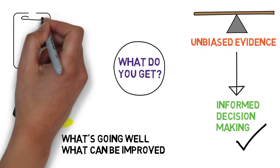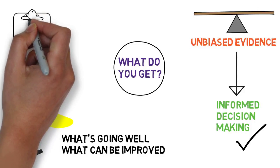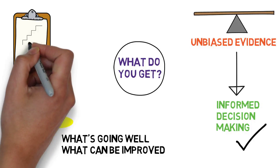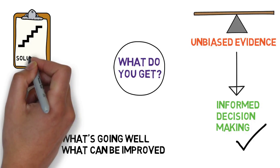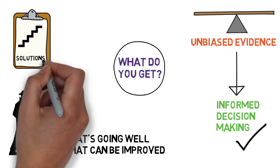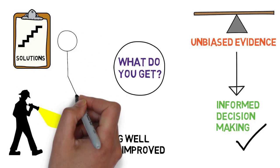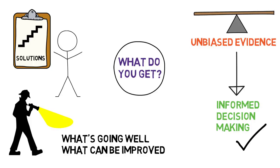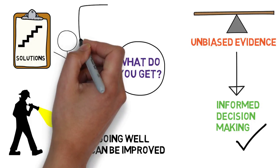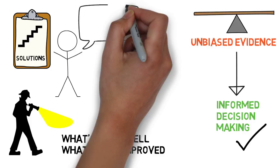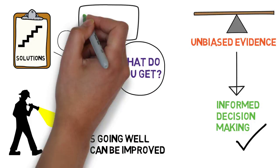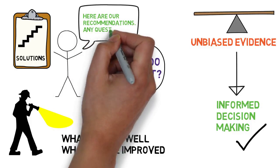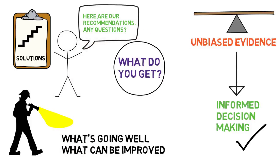Our behaviour audit isn't focused on finding problems — Ofsted have cornered the market on that one. It's about identifying solutions and next steps. So we provide a written report that contains recommendations about where to take your school next, and we give you a feedback session with one of our specialists to explain in person what we found and the detail about our recommendations for the future.